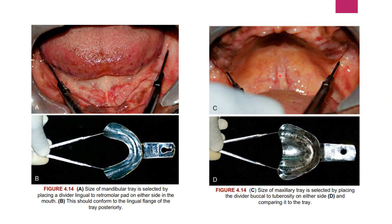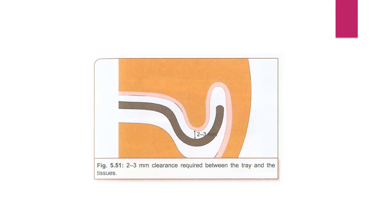For the upper jaw, the tips of the divider are placed in the buccal vestibule in the tuberosity region and compared to the tray flanges in the corresponding area. The size of the maxillary tray is selected by placing the divider buccal to the tuberosity on either side and comparing it to the tray. There must be two to three mm clearance required between the tray and the tissues.